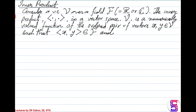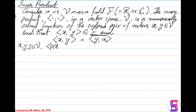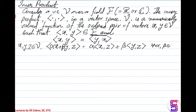Certain properties are satisfied. Property one: the inner product of x, y is the same as the conjugate of the inner product of y, x. The bar over the inner product of y, x denotes the conjugate operation. Property two: if x, y, z are three vectors from the vector space, then the inner product of alpha x plus beta y with z equals alpha times the inner product of x, z plus beta times the inner product of y, z, for all alpha, beta in the field and all x, y, z in the vector space.